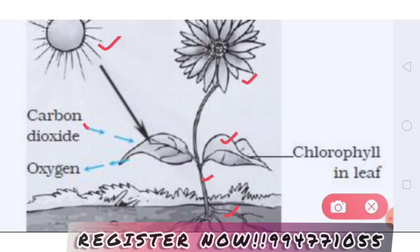We know that plants take in carbon dioxide and give out oxygen. We know there is a green pigment in the plant leaf that helps in making food. That green pigment is called chlorophyll.